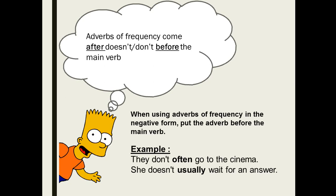Now, if I have the negative form in the sentence, where should I put the adverb of frequency? It's before the main verb. They don't often go to the cinema. Where is the main verb? It's 'go.' 'Don't' is a helping verb, so we care about the main verb, which is 'go.' It's before the main verb, so I'll add it before the main verb — 'often' before 'go.'